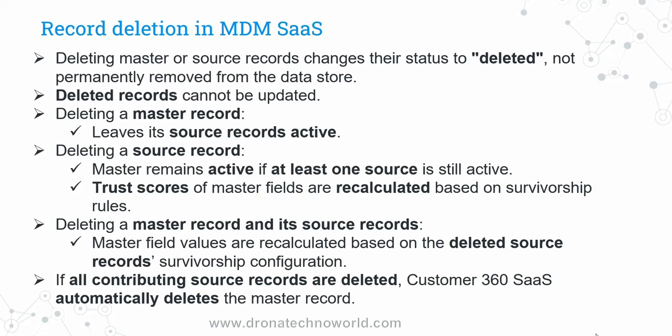What will be the impact on the trust score? The trust score of the master field will be recalculated if you delete any one of the source records. What will happen if you delete both master and source records? The trust is recalculated based on the deleted records and the final trusted values will be populated to the master record. If all contributing source and Customer 360 SaaS source records are deleted, then the master record will also be automatically deleted — you don't have to take any special action.